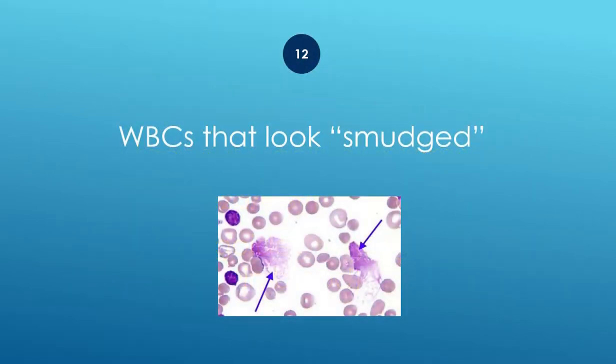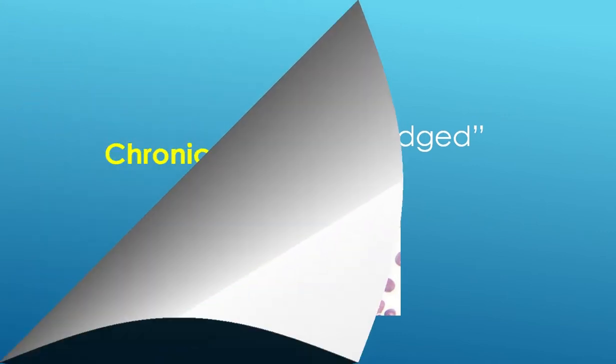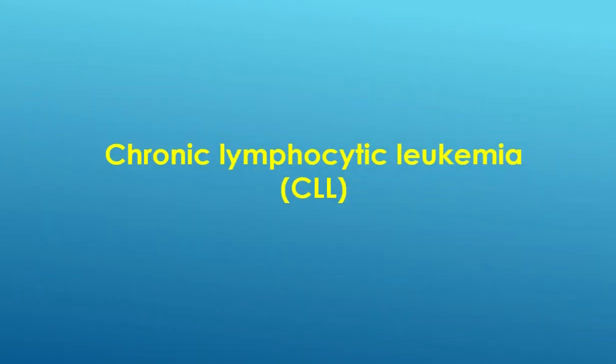White blood cells that look smudged — what is the diagnosis? Chronic lymphocytic leukemia, CLL.